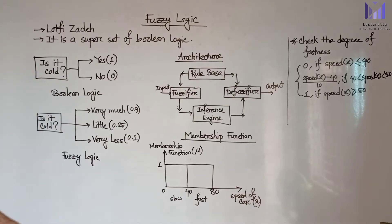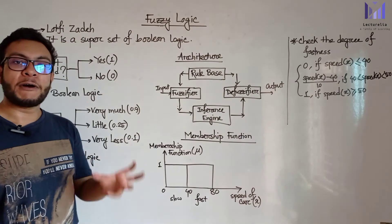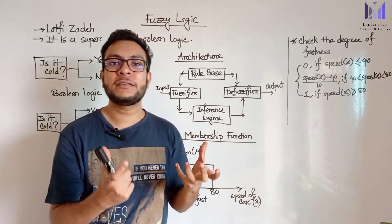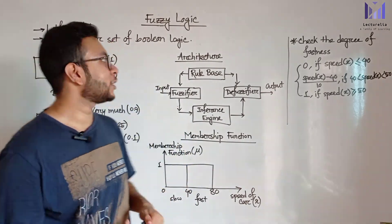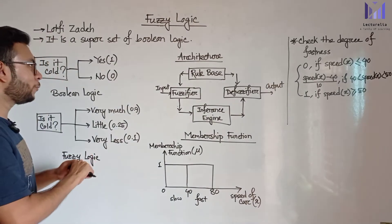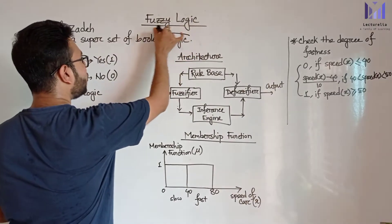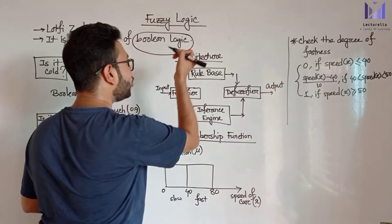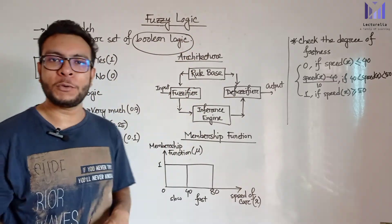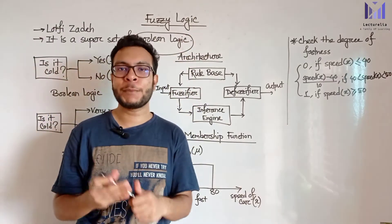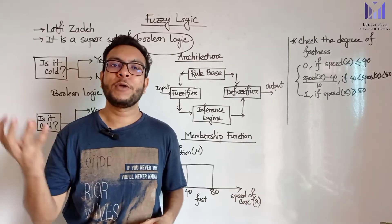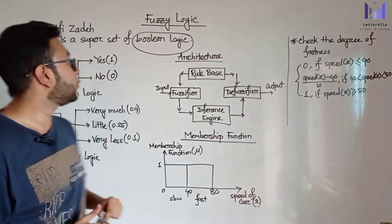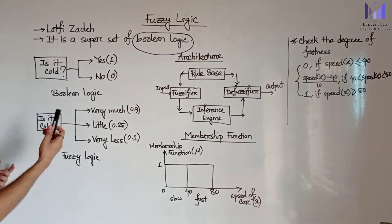The name associated with fuzzy logic is Lotfi Zadeh. Fuzzy logic is actually a superset of Boolean logic. We already studied Boolean logic. In Boolean logic, any value is either zero or one - zero represents false and one represents true.